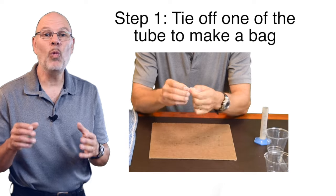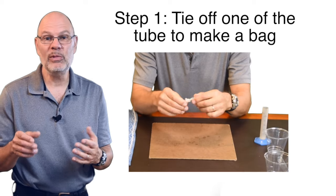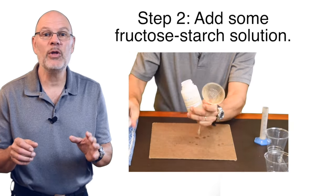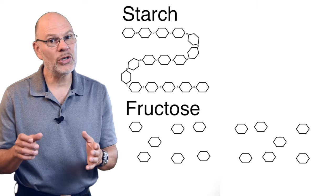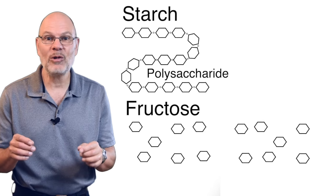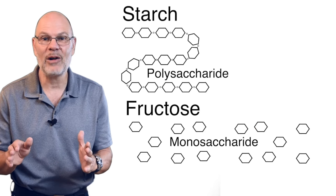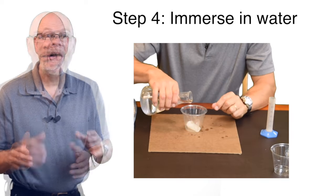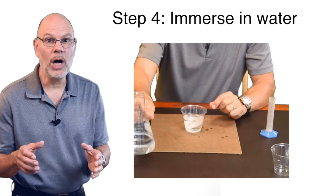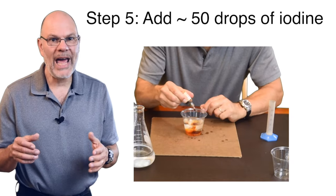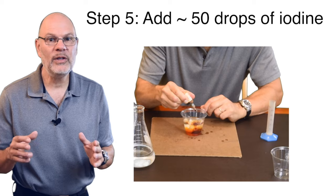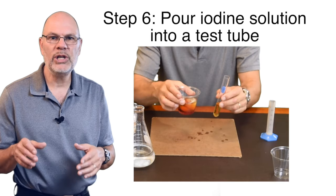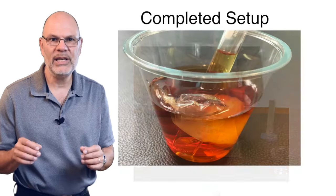I'm going to tie off one end of the tube to make it into a bag. I'm filling the bag with a solution that contains both fructose and starch. Starch is a polysaccharide and fructose is a monosaccharide. I'm sealing the bag by tying the other end and placing it into a cup of water. Into that cup, I'm going to add about 50 drops of iodine solution. I'm going to pour off a bit of the solution in the cup into this test tube.